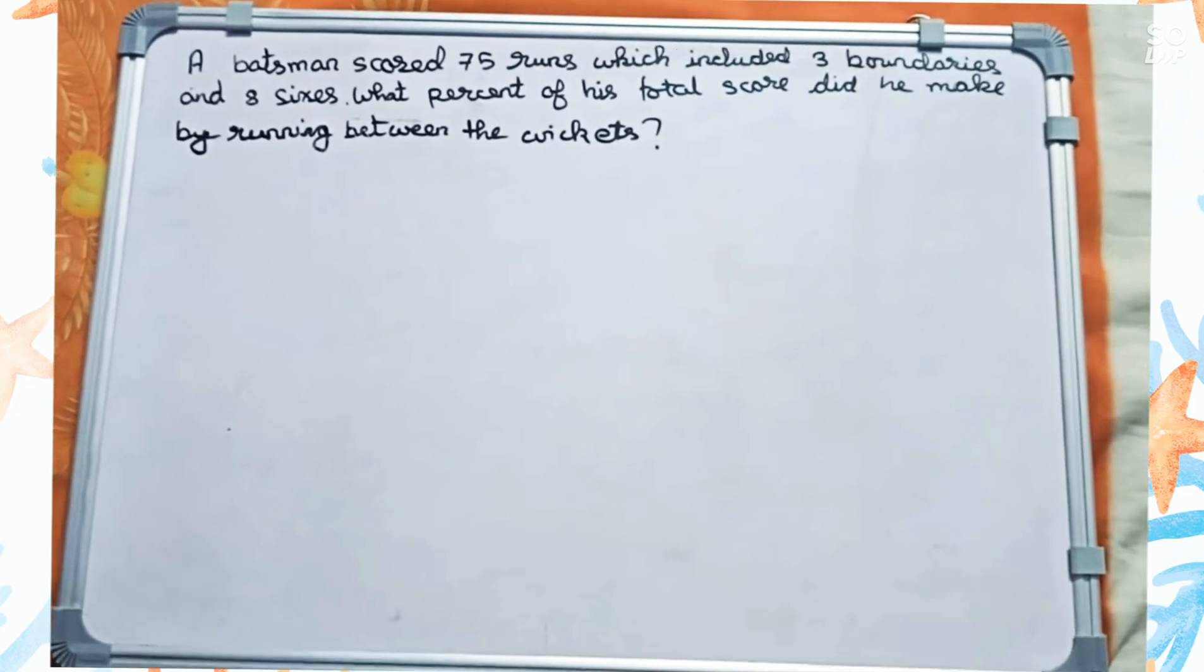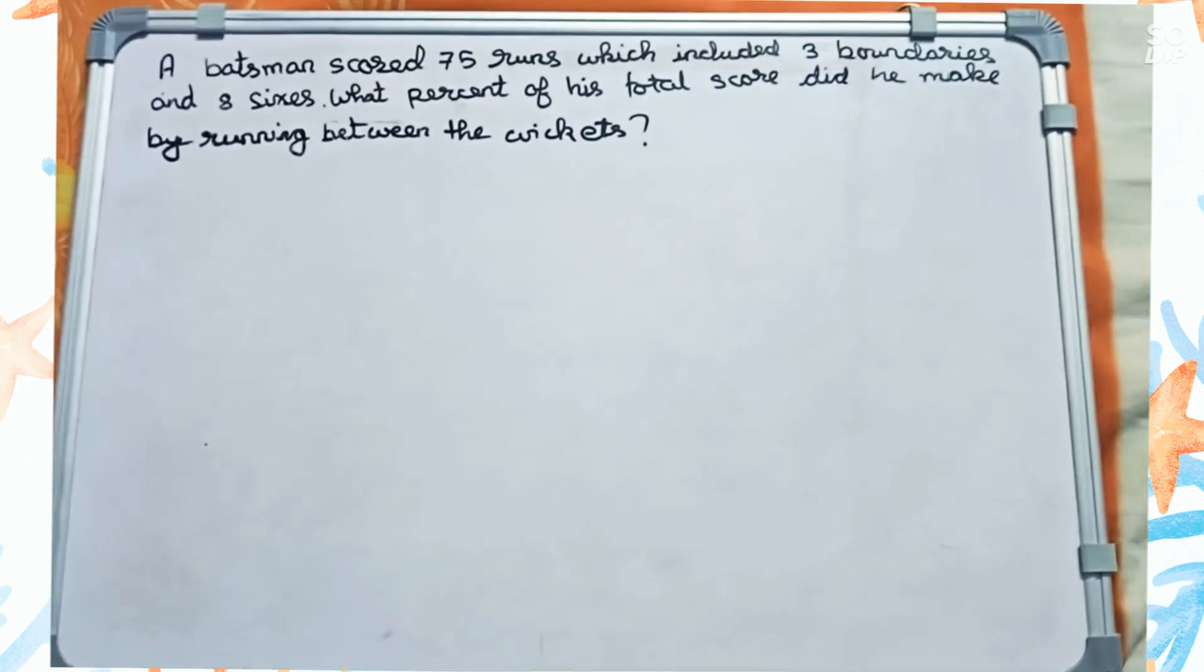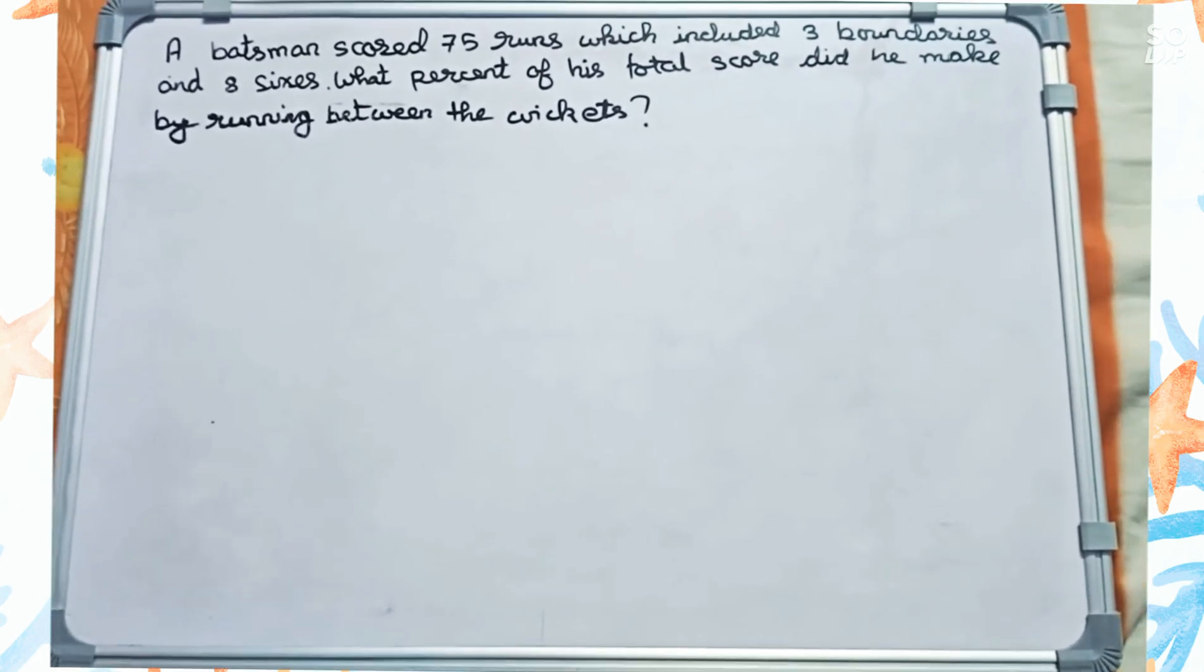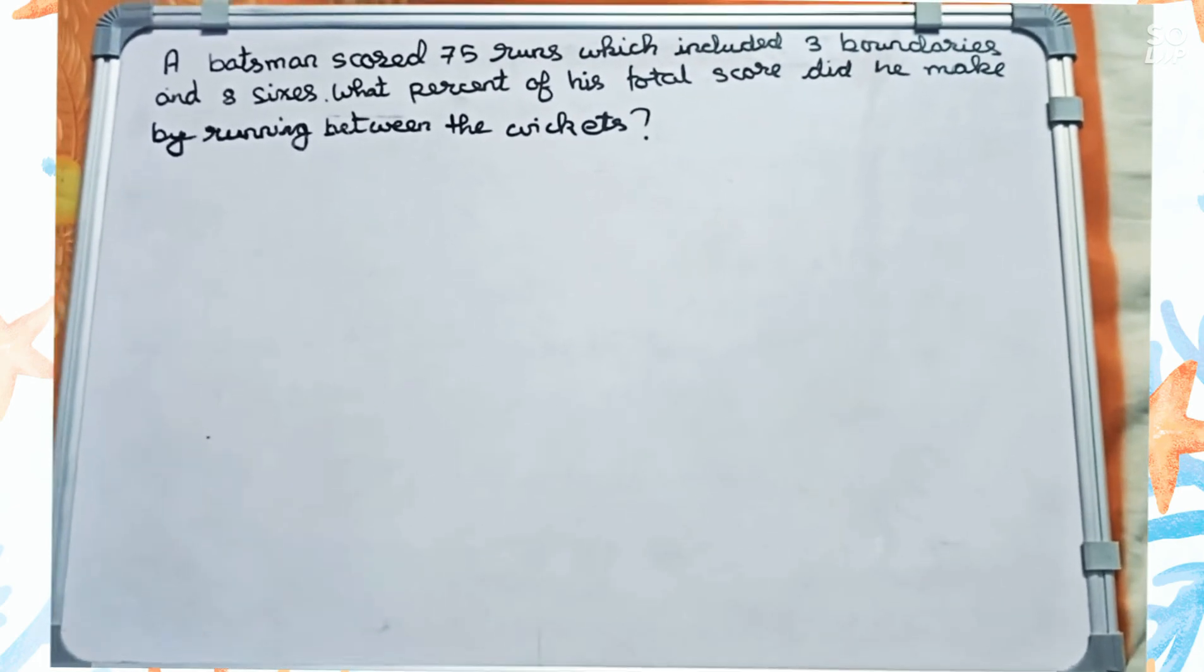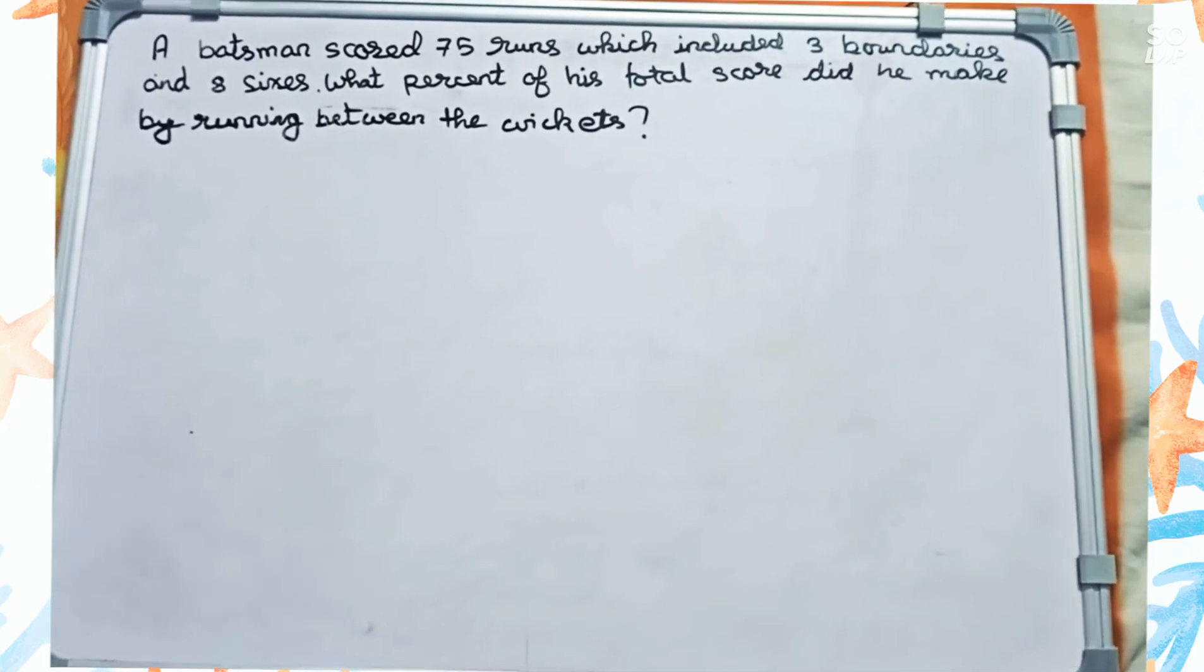Hello guys, welcome to this video. Our question is: a batsman scored 75 runs which included three boundaries and eight sixes. What percentage of his total score did he make by running between the wickets? Let's start.